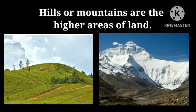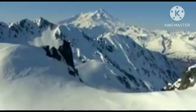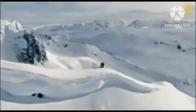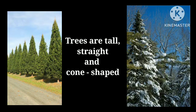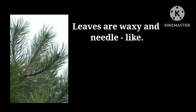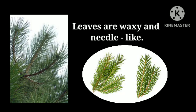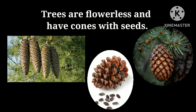Hills or mountains are the higher areas of land. They are colder than plains and often receive snowfall in winter. Plants growing in these areas adapt to live in cold conditions. Trees have thick barks, are usually tall, straight, and cone-shaped, which allows snow to slide off their branches easily. Leaves of trees are waxy and needle-like to prevent loss of water. Trees are flowerless and in place of flowers they have cones with seeds inside them. Thus, they are also called coniferous trees.